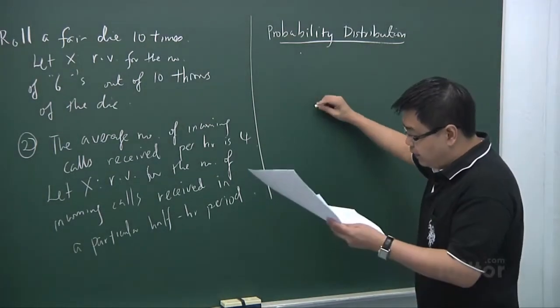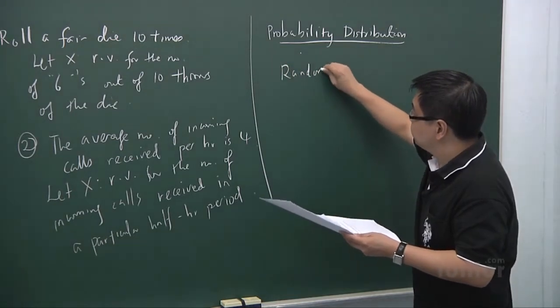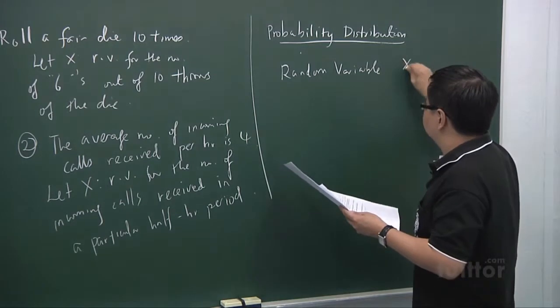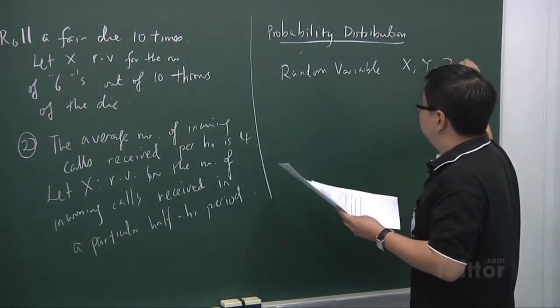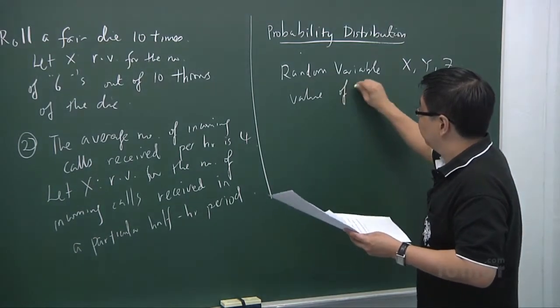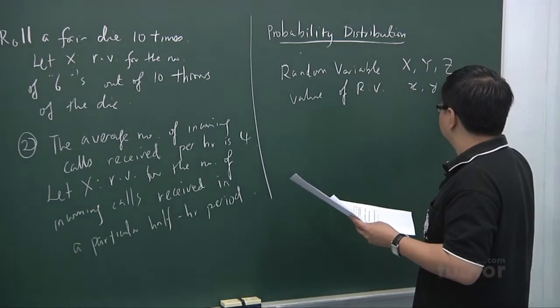And we usually also denote random variables in capital letters. That means x, y, or z. And the value of the random variable we will usually denote as small x, small y, and small z.